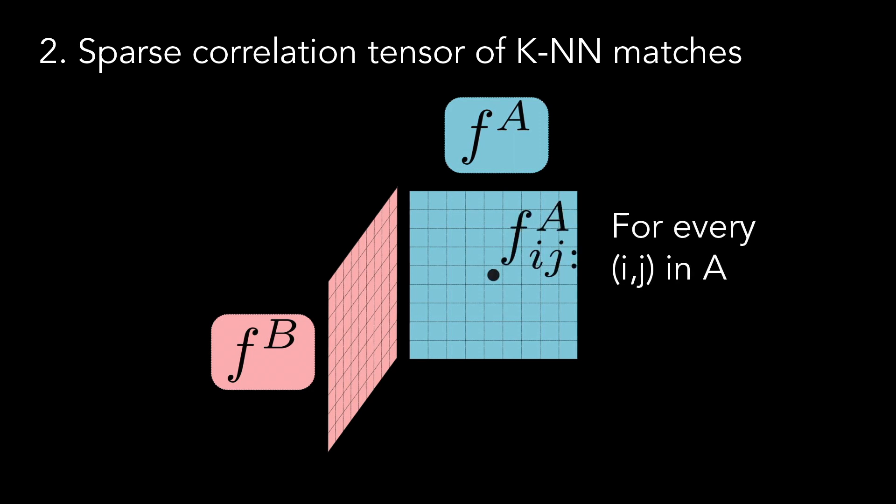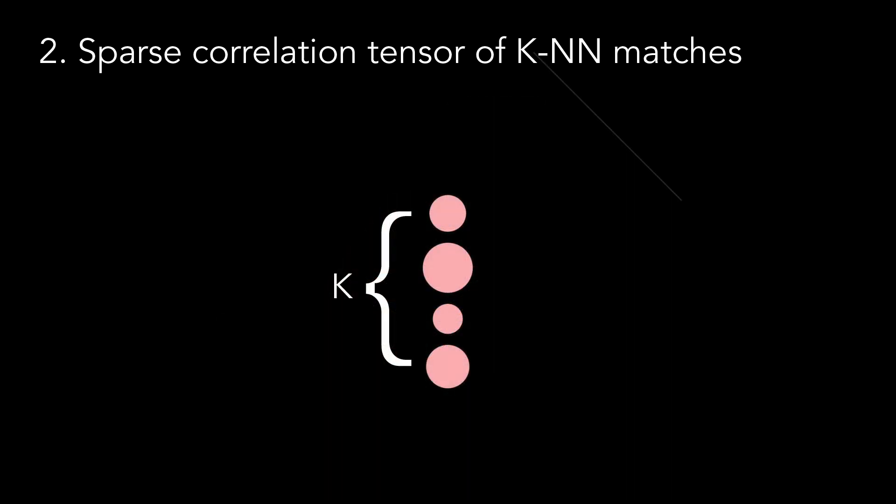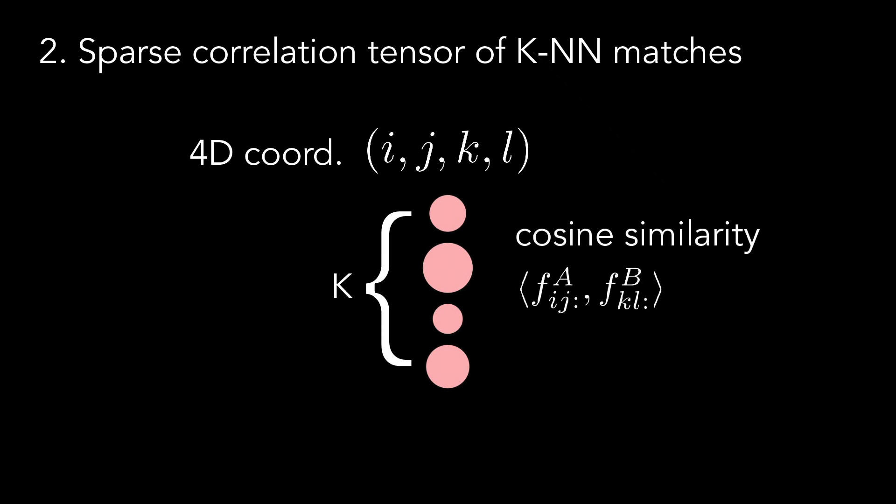For every feature in A, we therefore find its top k matches in B. For each of these k matches, we have a 4D tuple of the coordinates i, j in A and k, L in B of each match, and also a similarity score. These values are stored in a one-sided 4D sparse tensor, containing the matches from A to B.